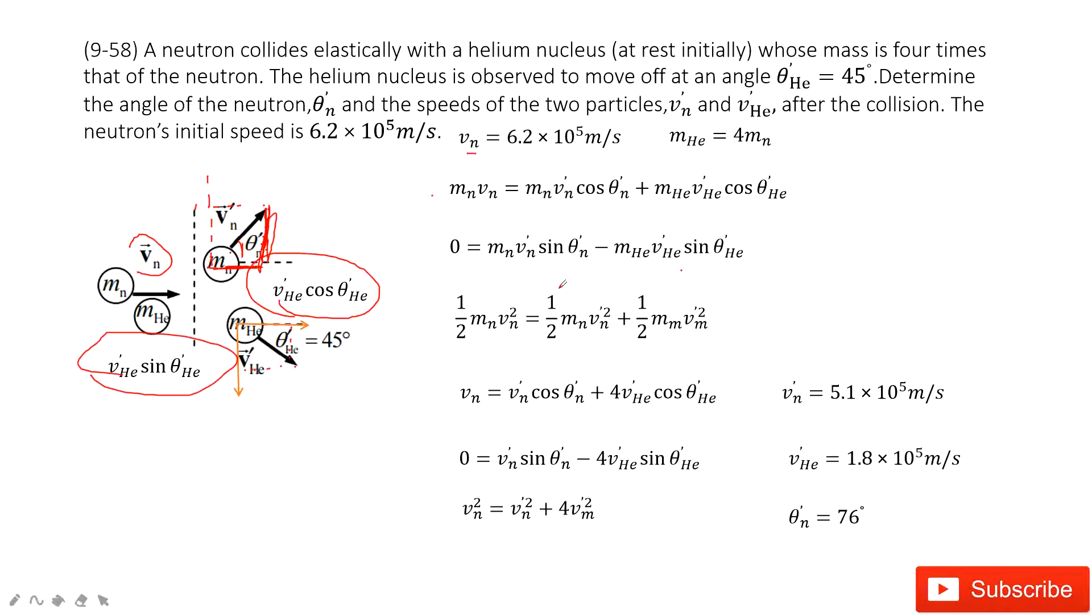Now this last one we need to determine. It is the kinetic energy conserved. So initial kinetic energy equal to final kinetic energy. Now we can input the mass ratio inside. We can simplify these three equations.